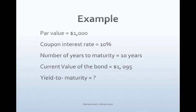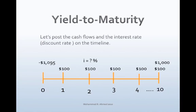Let's assume you have invested in a $1,000 par value bond that pays 10% annually. The bond matures in 10 years and the current value of the bond is $1,095. What is the bond's yield to maturity?